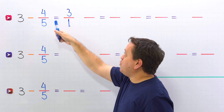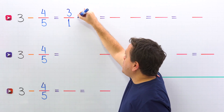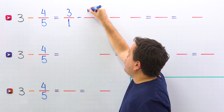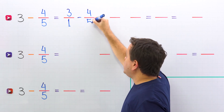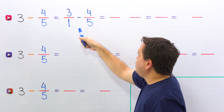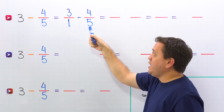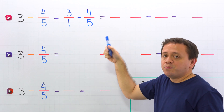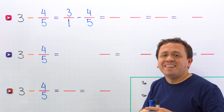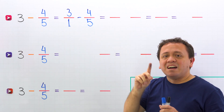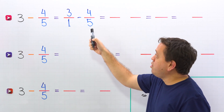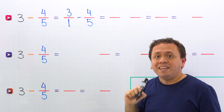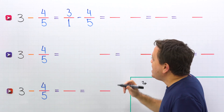Then we have 3 over 1 minus 4 fifths, and now we need to subtract these two fractions with different denominators. To find the difference, we need the least common multiple of the denominators, or the least common denominator.